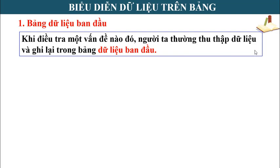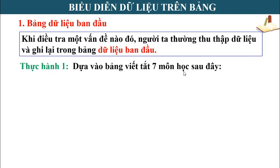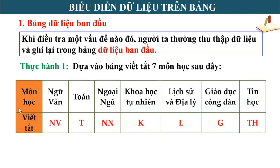Để vận dụng nội dung lý thuyết, chúng ta thực hiện 2 bài thực hành. Bài thực hành thứ nhất dựa vào bảng viết tắt 7 môn học: ngữ văn, toán, ngoại ngữ, khoa học tự nhiên, lịch sử và địa lý, giáo dục công dân, tin học. Môn ngữ văn và ngoại ngữ đều bắt đầu bởi chữ N, nên ngữ văn viết tắt là NV, ngoại ngữ là NN. Tương tự, toán viết tắt là T và tin học là TH.